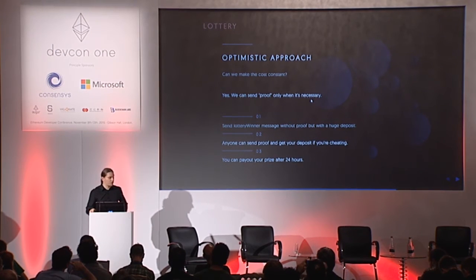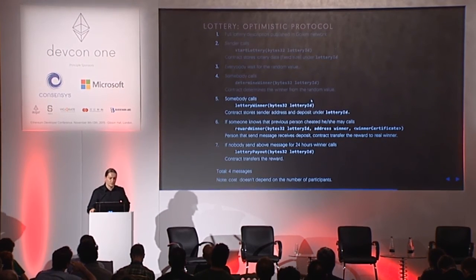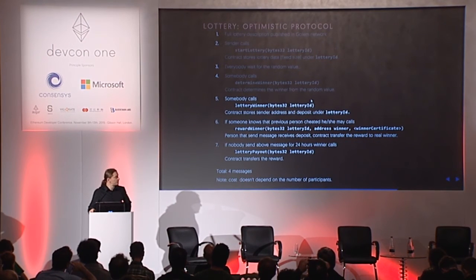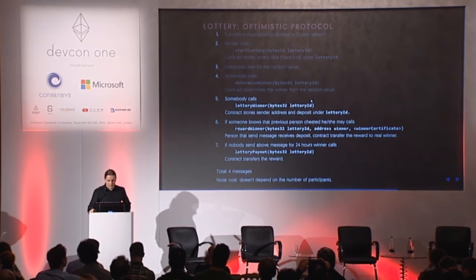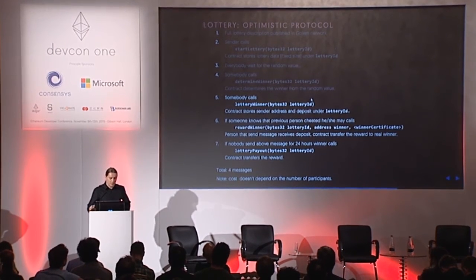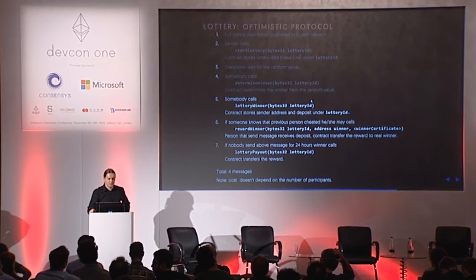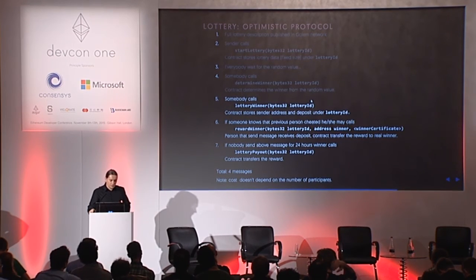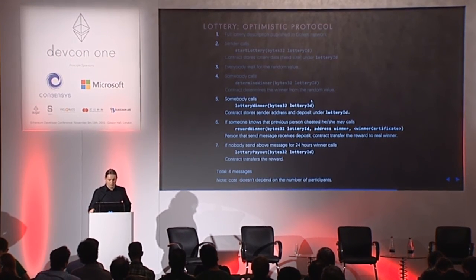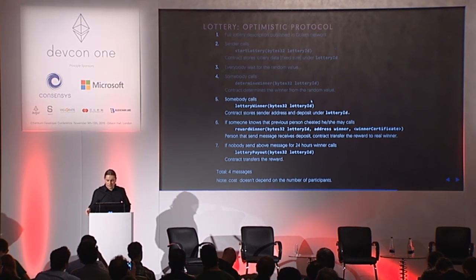We believe 24 hours is just enough to make it fair. The algorithm is pretty similar to the first non-optimistic implementation that uses certificates, but here we have two additional steps: lottery-winner and lottery-payout. Lottery-winner indicates that a node believes it has won. Lottery-payout can be called after 24 hours if no one vetoes. Reward-winner is the veto, which results in revealing the cheater, sending the deposit to the revealing node, and sending the prize to the winning node.